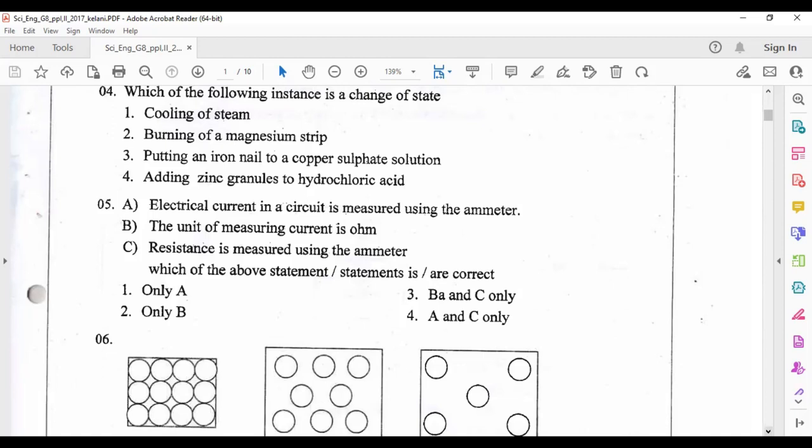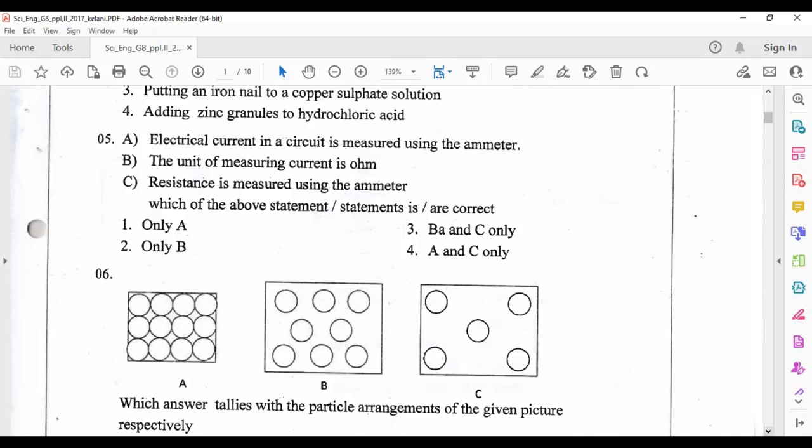Other three answers - burning of a magnesium strip, putting an iron nail to a copper sulfate solution, adding zinc granules to hydrochloric acid - all these three are examples for chemical changes and they are not state changes. Fifth one: electrical current in a circuit is measured using an ammeter, it is correct. The unit of measuring current is ampere, not ohm. Ohm is the unit of measuring resistance.